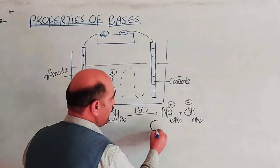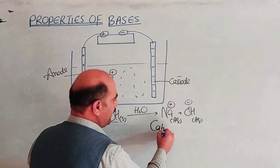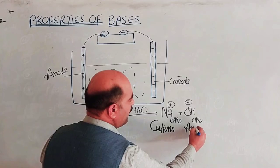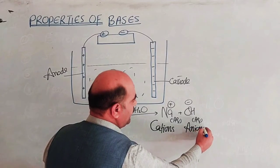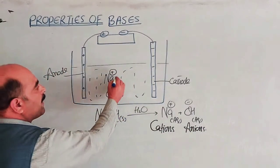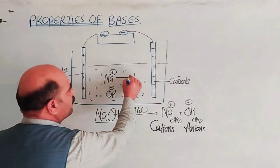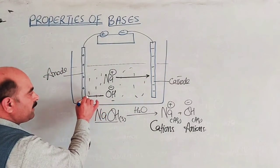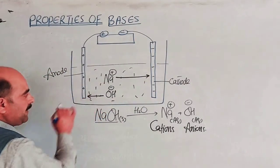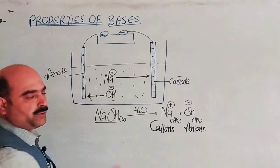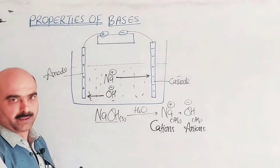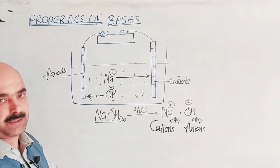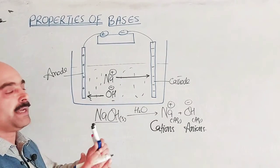Positive ions are called cations and negative ions are called anions. Cations move toward the cathode and anions move toward the anode. When the movement of ions starts, we have a current within the solution — this is electrical conduction through ion movement.